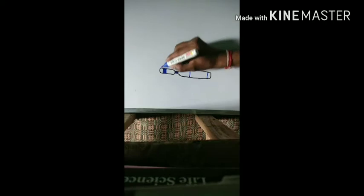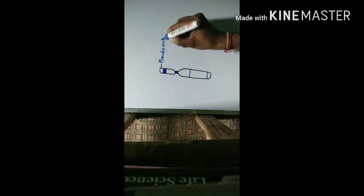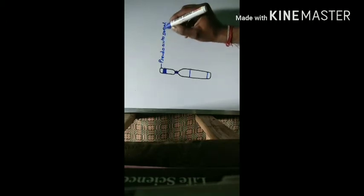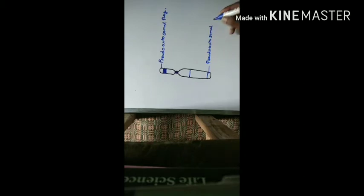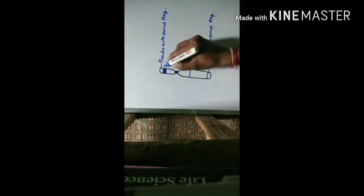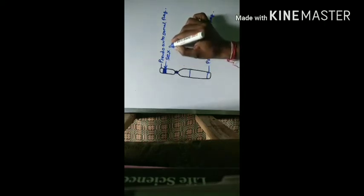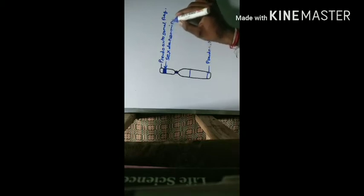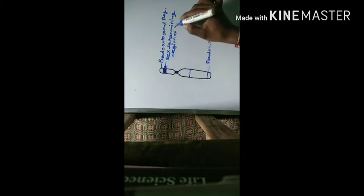This is the pseudo-autosomal region, and this is also the pseudo-autosomal region. This is the SRY, or sex determining region of Y.